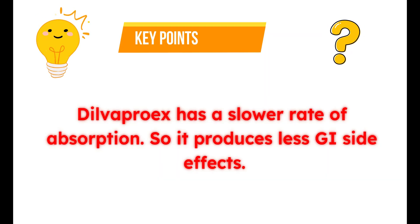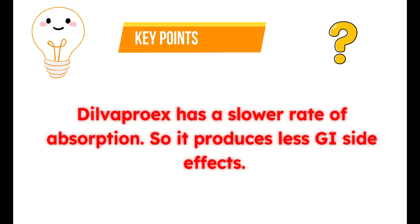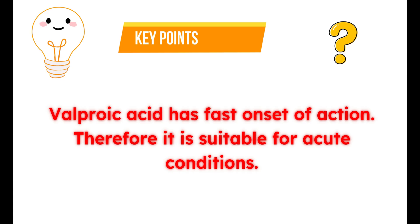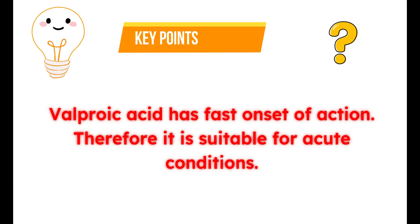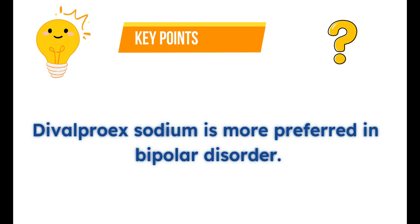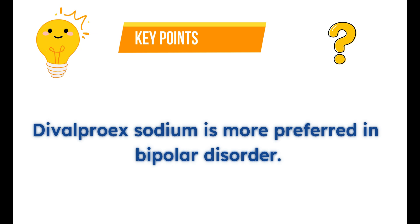Which medication is better suited for treating acute conditions of epilepsy? Valproic acid has a fast onset of action, so it is more preferred to treat acute attacks of epilepsy. Which medication is preferred in the treatment of bipolar disorder? Because of consistency in plasma levels, divalproex sodium is more preferred. This prevents fluctuations of the medication in the plasma, reduces the risk of side effects, and reduces mood swings due to consistent medication levels.